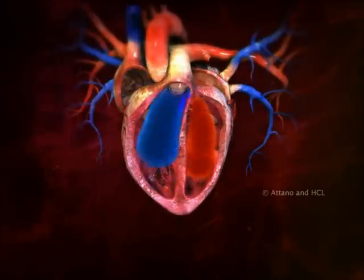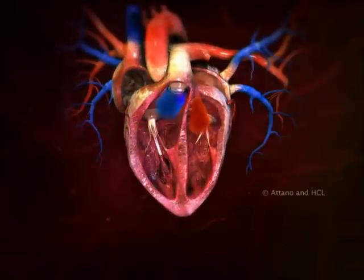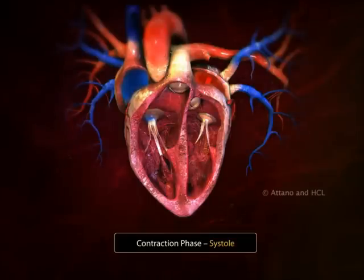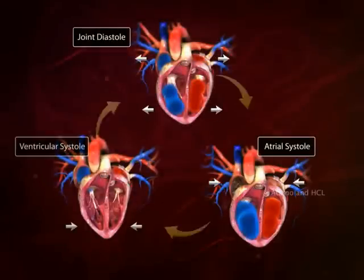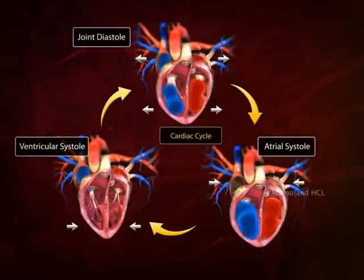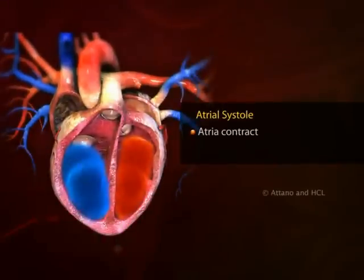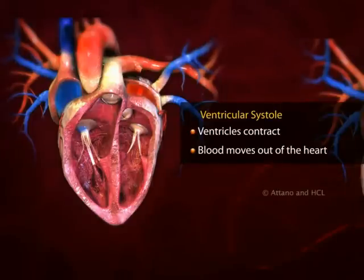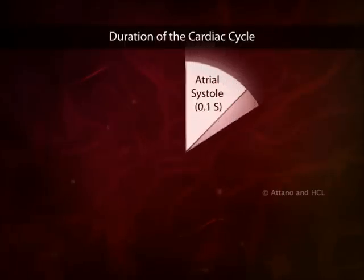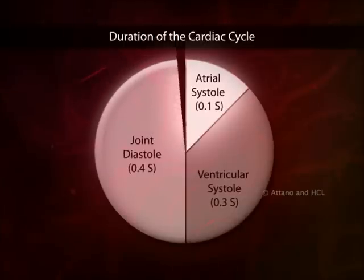The pumping action of the heart is due to the alternate contraction and relaxation of the atria and ventricles. The contraction phase is called the systole, and the relaxation phase is called the diastole. This rhythmic contraction and relaxation during one heartbeat constitutes the cardiac cycle. The heart beats about 72 times per minute, so the duration of each cardiac cycle is approximately 0.8 seconds.